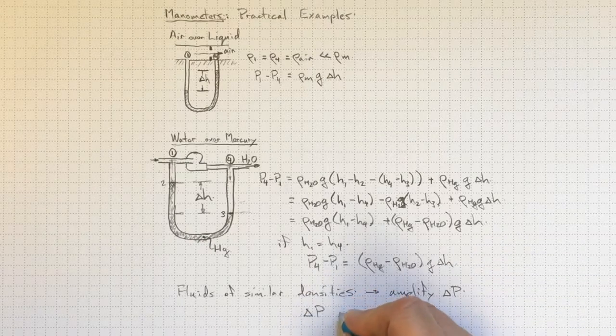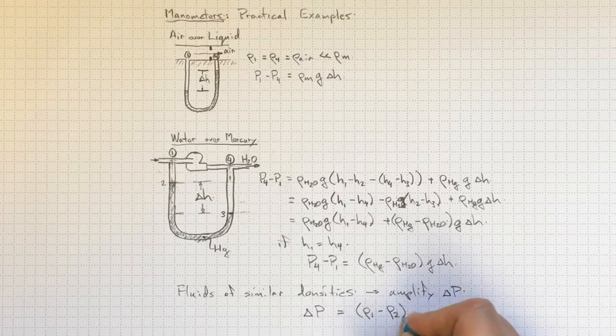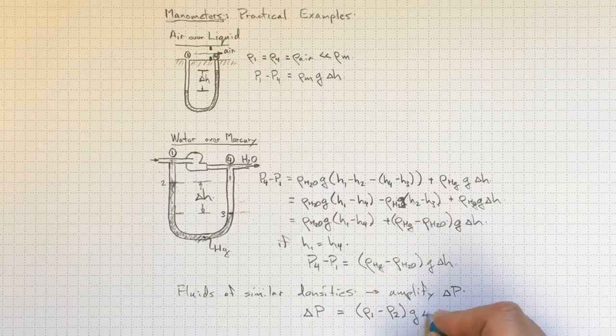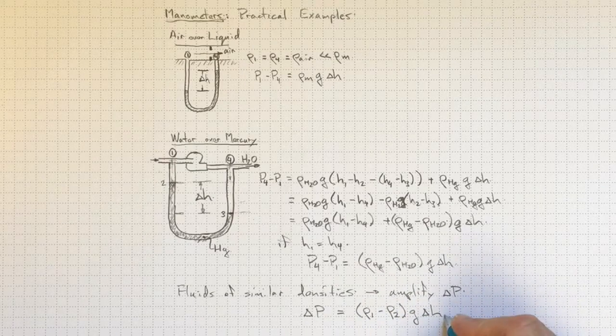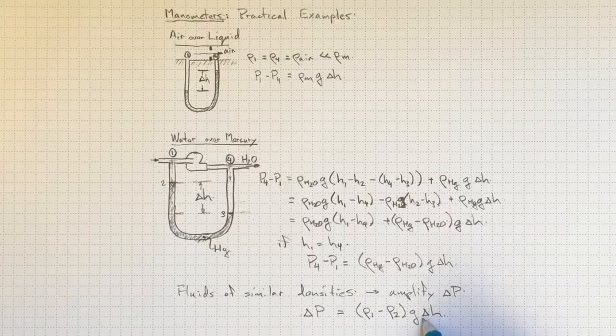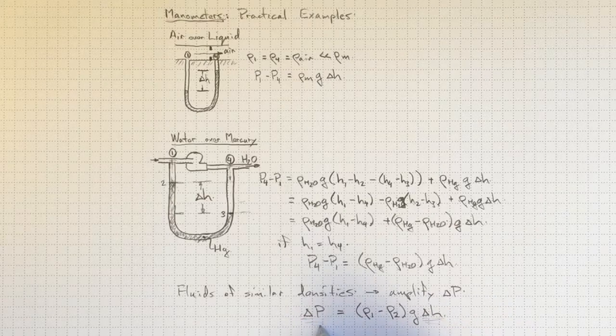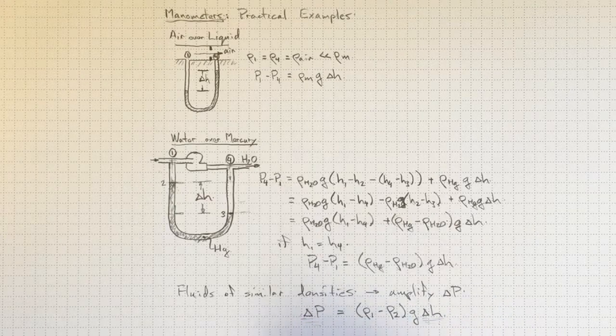So the delta P, small delta P, small density difference times G will lead to a larger difference in height. So that by using similar fluid densities, we can get a much larger change in height for the same change in pressure. So those are some practical cases.